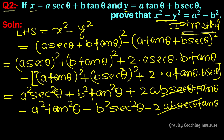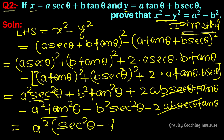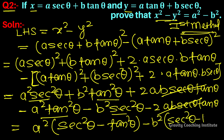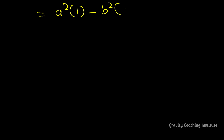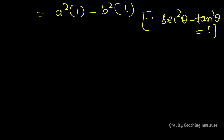The 2ab·sec θ·tan θ terms cancel. Taking a² common from the first two remaining terms and b² common from the other two, we get: a²(sec²θ - tan²θ) - b²(sec²θ - tan²θ). Since sec²θ - tan²θ = 1, this equals a²·1 - b²·1 = a² - b².